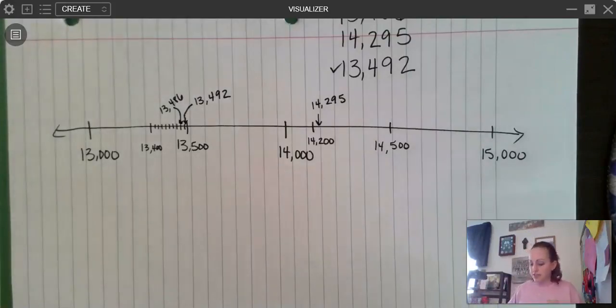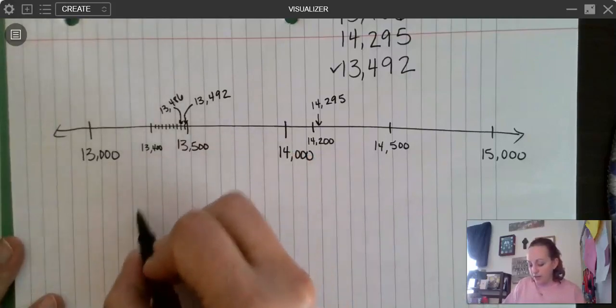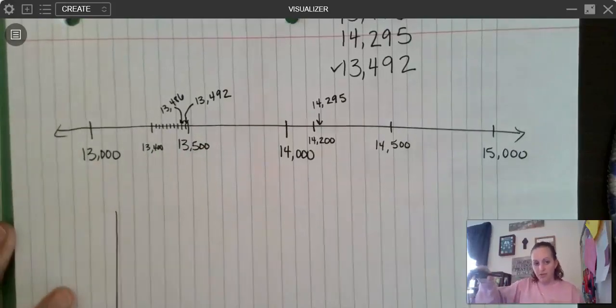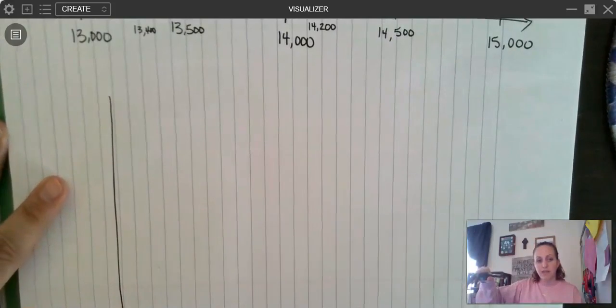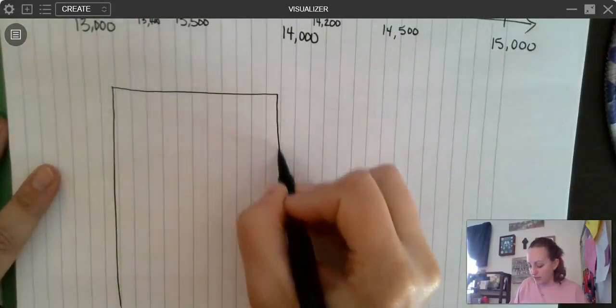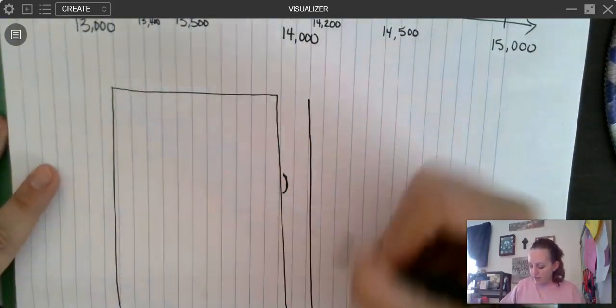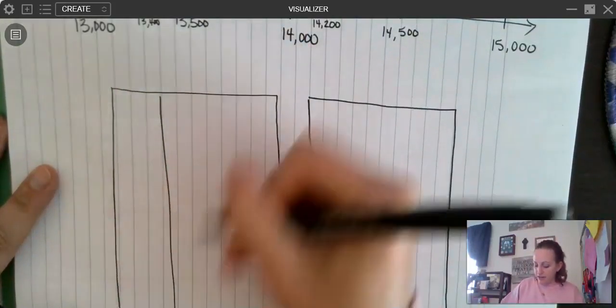Another way to do this would be to use a place value chart. So I'm going to kind of do two houses. I'm going to make them like three story houses. Okay. Let me move my camera. There we go. All right. So I'm going to make my houses kind of like three story houses. All right. And then here's my comma. All right.